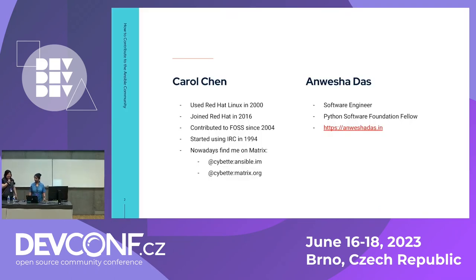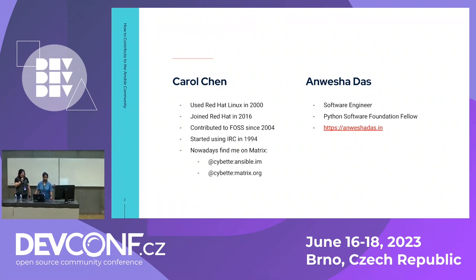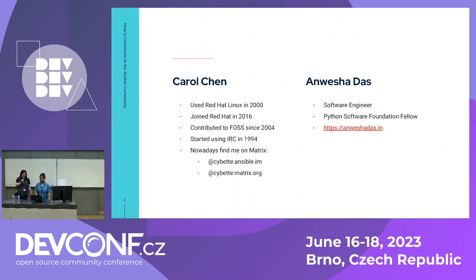I'm Carol Chen. I listed a bunch of dates to show I've been a Linux user for a while. My first distro was Red Hat Linux 6.something — not Red Hat Enterprise Linux. I finally joined Red Hat, one of my dream jobs, in 2016. I started contributing to FOSS projects around 2004, though I'm hazy on the exact time. If I had seen a talk like this before that, I probably would have contributed earlier, because there are many different ways to contribute, not just code.